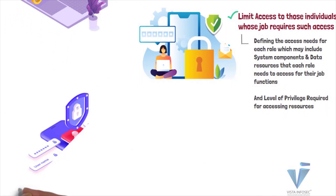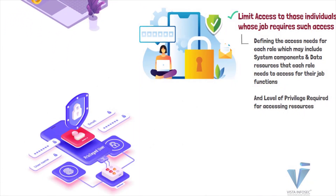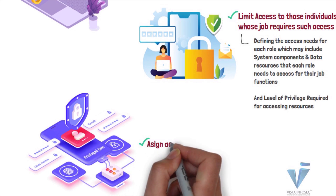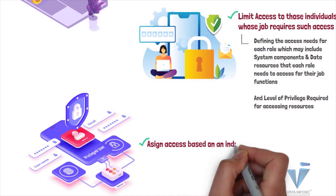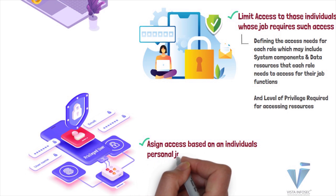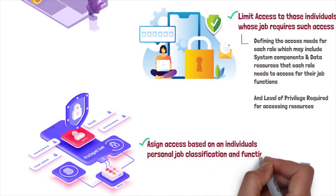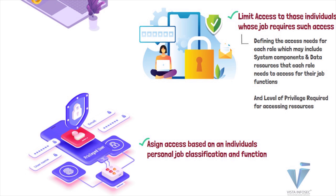Organizations are required to restrict access to privileged user IDs to the least privilege necessary for performing job responsibilities. They are also required to assign access based on an individual's personal job classification and function. The organization should have an established process for documented approval by authorized parties specifying required privileges.